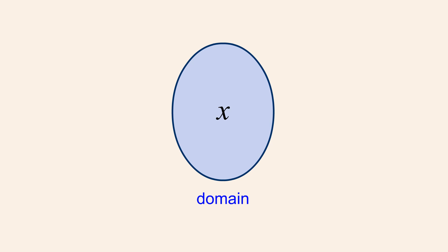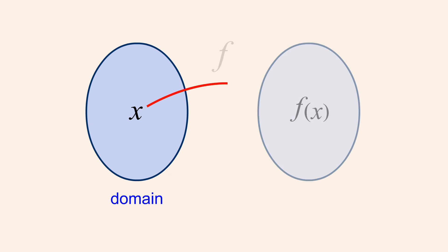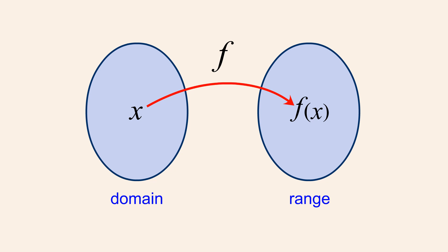The set of all possible values which can be assigned to the input variable is called the domain of the function, and the set of output values which the function produces is called the range of the function. For functions whose input and output values can be any real number, the domain and range will both be equal to the set of real numbers R.